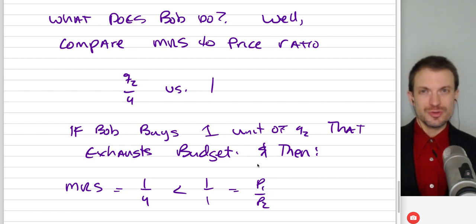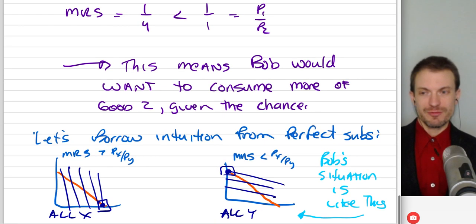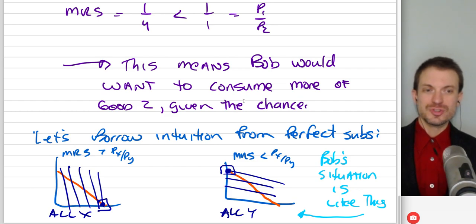Let's borrow the intuition from perfect subs. Here's the picture from perfect subs. If Bob had perfect subs preferences and the MRS was bigger than the price ratio, this would give us an all X solution. That's not what's happening. Instead, we have the opposite. Here we have the MRS is smaller than the price ratio. That tends us towards this all Y solution. If we want to be on the highest indifference curve possible, this is going to move us up and to the left along our budget constraint. So Bob's situation is actually a lot more like this one, which tells us that Bob's actually going to want to consume more of good two, given the chance. With $10 available, Bob can consume exactly one unit of good two. So what Bob's going to do optimally? Bob will buy that one unit of good two, and then zero units of good one.